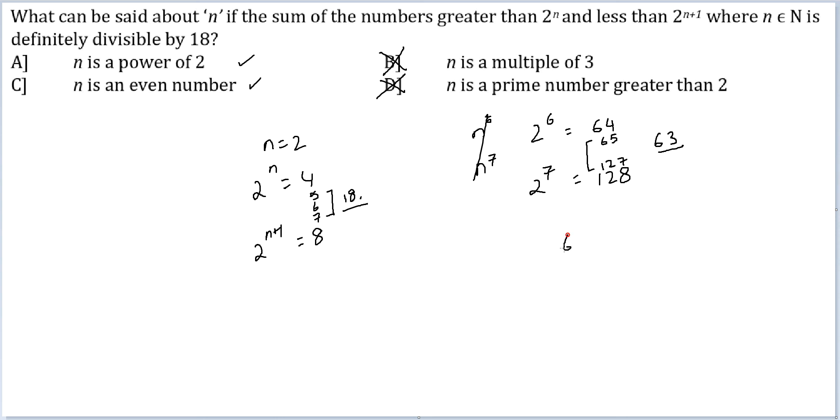The summation here I get is (65 + 127) divided by 2 times 63. 65 plus 127 is 192 divided by 2 times 63. I cancel, I get 96.